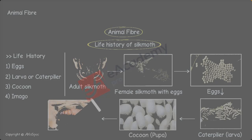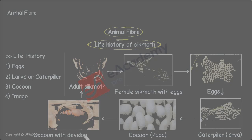This is a picture of the growing moth inside the cocoon. After two or three weeks, the moth emerges out by breaking the cocoon. So the different stages are: 1. Eggs, 2. Larva or caterpillar, 3. Cocoon, and 4. Imago — the adult moth.